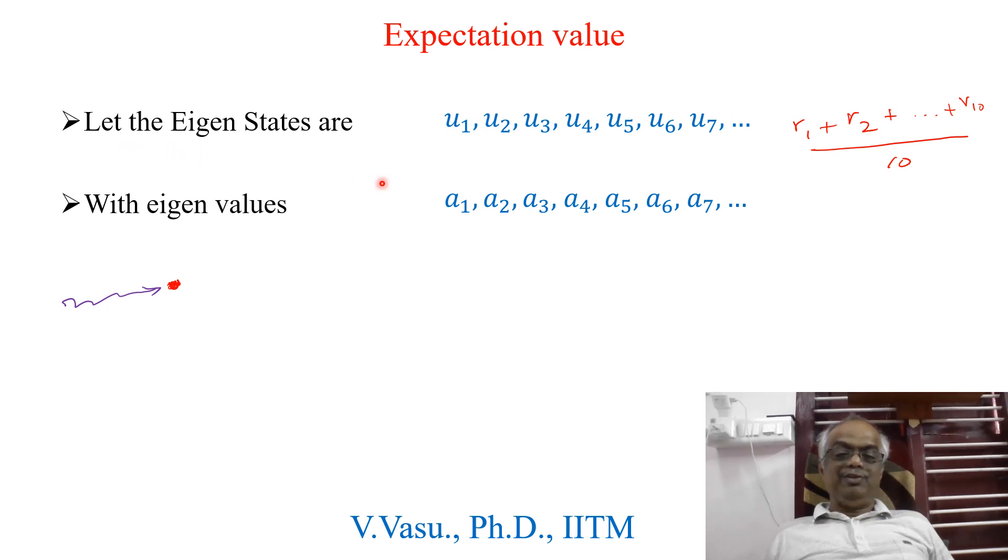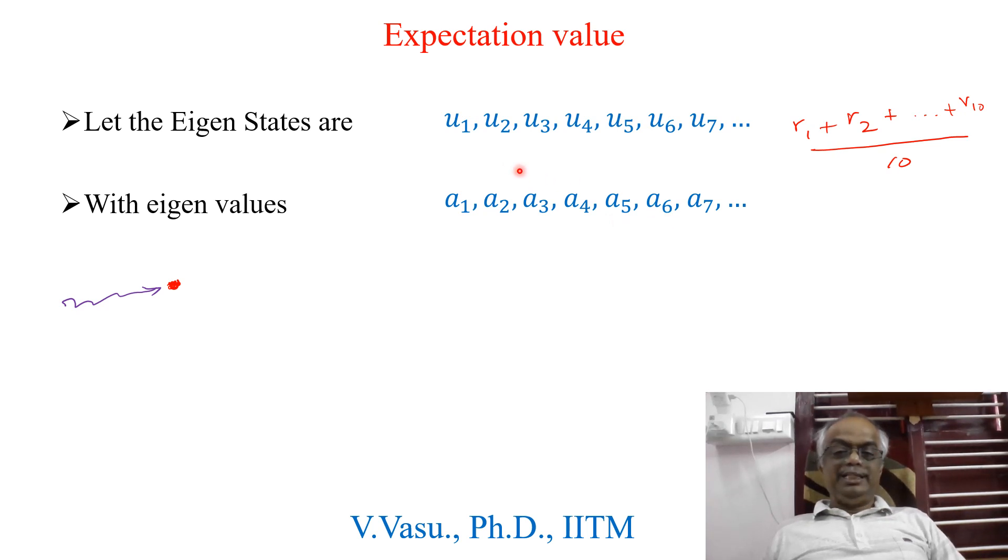Let us say we have an Eigen state U1, U2, U3, U4 and it goes on up to UN, with the Eigen values A1, A2, A3, A4, A5, and so on. Then you take this as an example. We will find what is the expectation value.